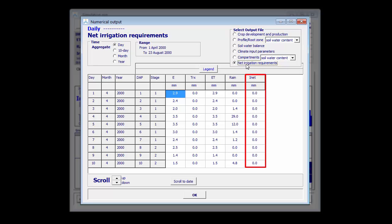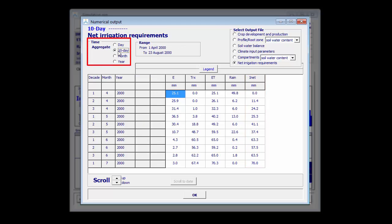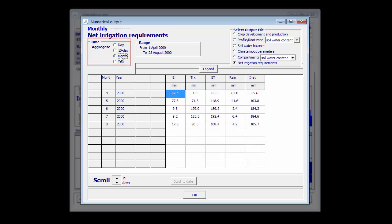In the last column, the net irrigation requirements are given for each day of the growing season. I can aggregate them on a 10 daily or on a monthly level.